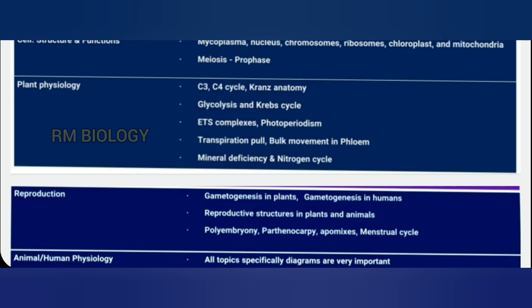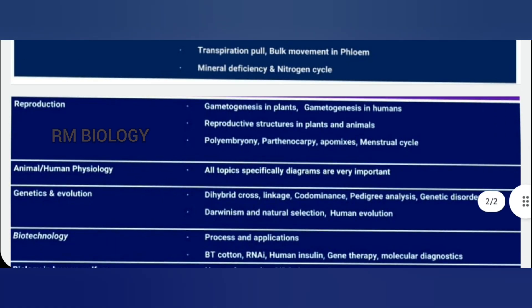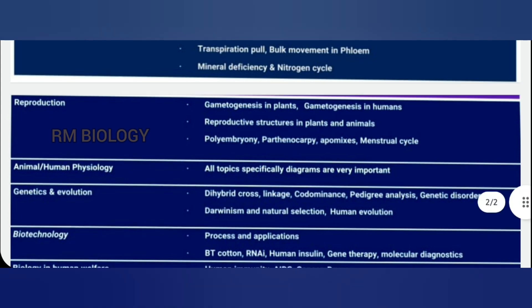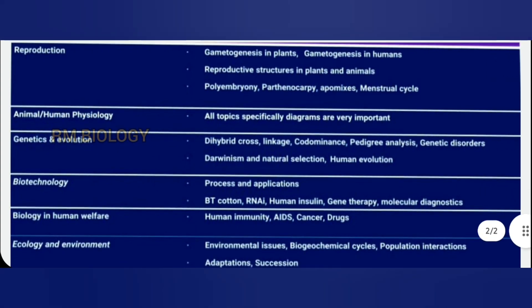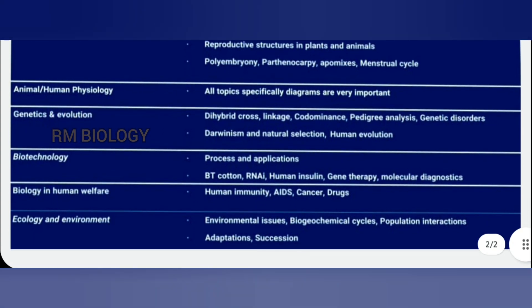Reproduction: gametogenesis in plants and humans, reproductive structures in plants and animals, polyembryony, parthenocarpy, apomixis, and the menstrual cycle. Animal and human physiology — diagrams are very important here.